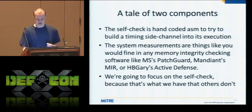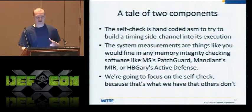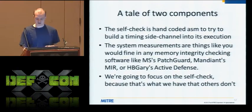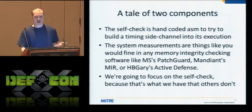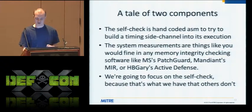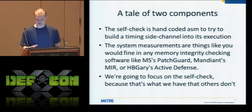Checkmate has two components but we're only going to talk about one today: the self-checking mechanism. There's also the part measuring other security software and the operating system itself — analogous to other memory integrity verification things. Patch Guard in Windows does some Windows OS self-checking; companies like Mandiant and HBGary have things which do memory integrity verification. But we're focusing on the self-checking mechanism — this is what the other security software doesn't have. You can take Patch Guard, Mirror, Active Defense, any of those — if you're targeting them specifically, you can make them lie.